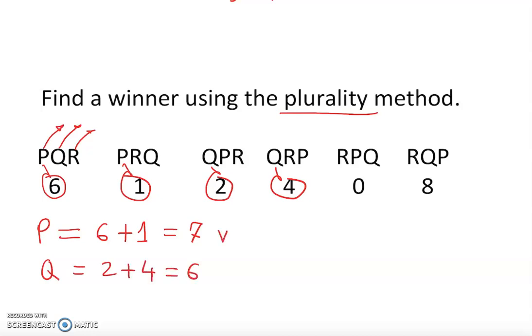And let's do the votes. Robert got 0 plus 8, which equals 8 votes. Let's see if anyone got the highest vote here.